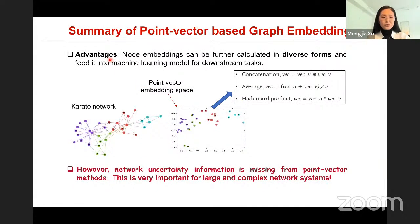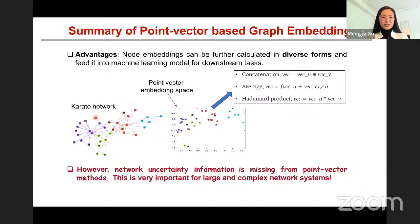As an example, an undirected binary karate club network can be embedded into a point vector space where nodes appear as distinct points with visible clusters. Node similarity in high-dimensional space can be obtained by computing vector distances in the low-dimensional embedding space using standard metrics. However, most such methods are deterministic and the uncertainty information is missing, which is very important for large and complex network systems.